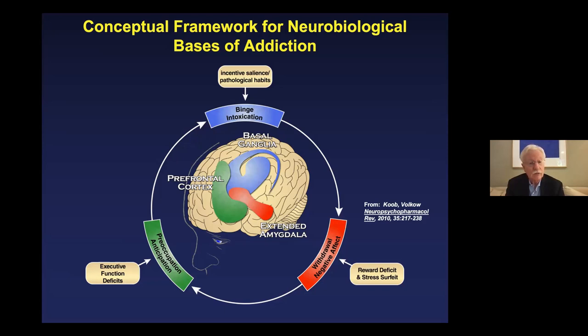The domains of dysfunction in the withdrawal stage involve a loss of your reward systems and a gain of your stress systems in the brain. The third stage is preoccupation anticipation — or the craving stage — where you stop drinking and may enter a prolonged period of abstinence. But there are residual effects on your stress systems and your executive function system, such that you have trouble making decisions properly, you're very impulsive, and it's difficult to delay reinforcement or resist that next drink.